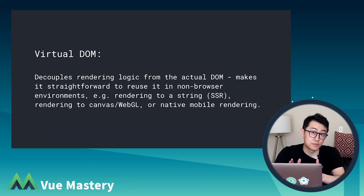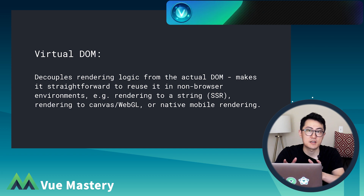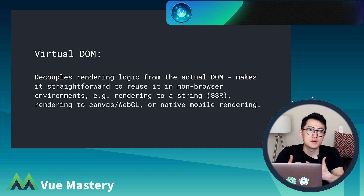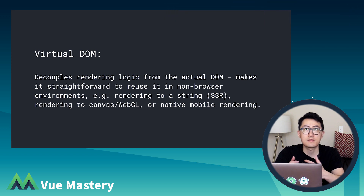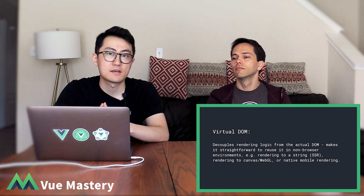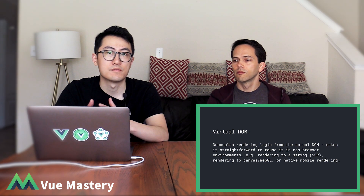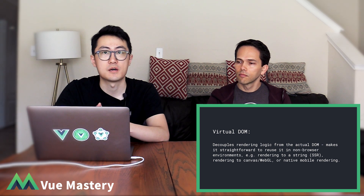There are some benefits of having a virtual DOM layer. The most important one is that it completely decouples your component rendering logic from the actual DOM and makes it more straightforward to reuse the runtime of a framework in other environments. For example, Vue allows third-party developers to create customized rendering solutions that target not just the browser, but also native environments like iOS and Android. It is also possible to use the API to create a custom renderer that directly renders to WebGL instead of DOM nodes.